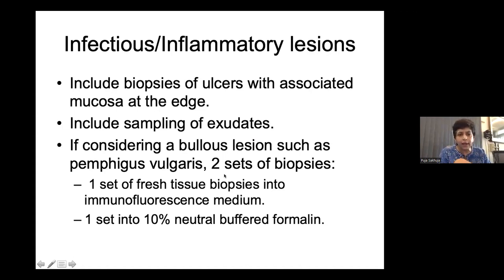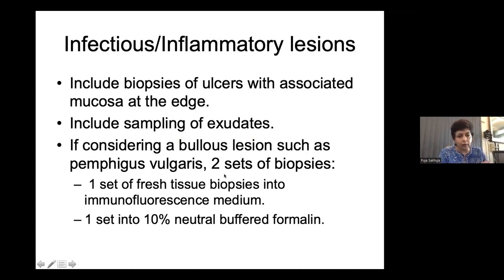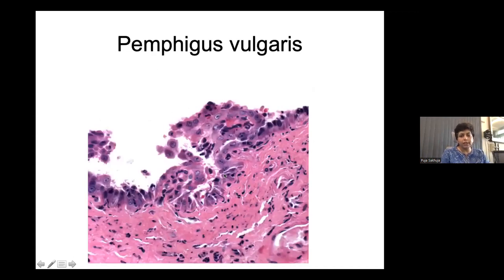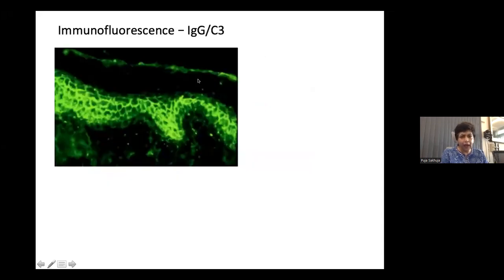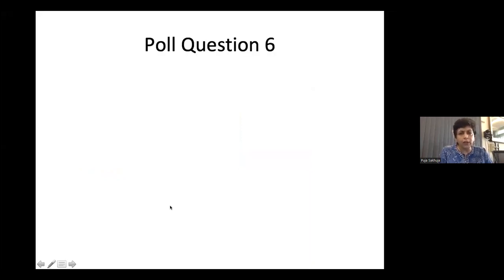For other infectious and inflammatory lesions, biopsy strategy includes: biopsies of ulcers along with the ulcer edge, samples of exudates to pick up organisms, and for bullous lesions, send one piece in immunofluorescence medium and the rest in 10% neutral buffered formalin. Pemphigus vulgaris shows a characteristic fishnet immunofluorescence pattern with IgG or C3 staining.